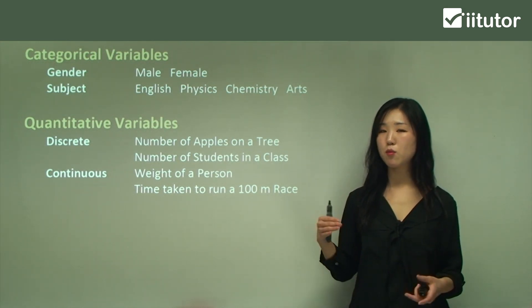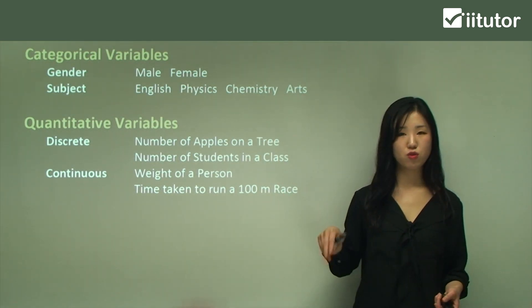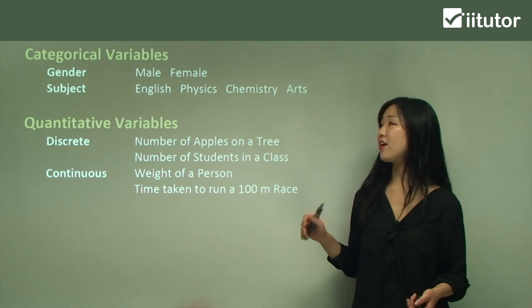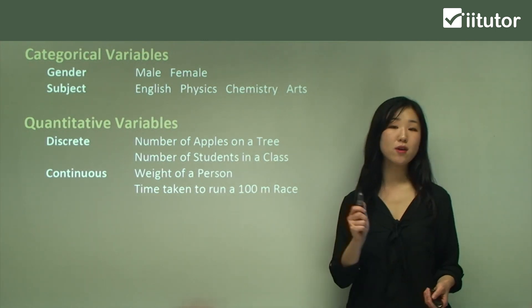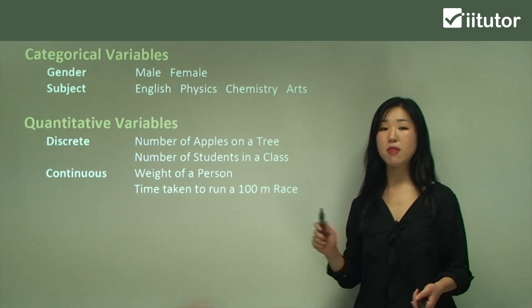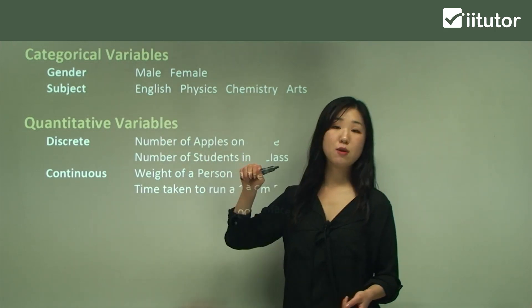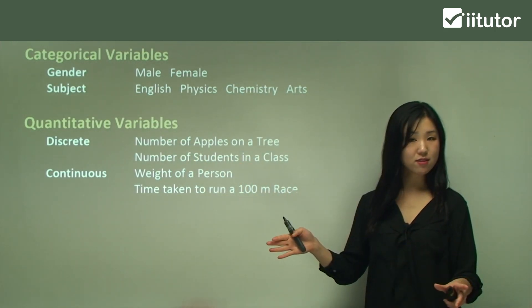So discrete and continuous are two subcategories within quantitative variables. Quantitative is a little more extensive because it branches into two. Remember: the two main types are categorical and quantitative, and quantitative has two separate branches we can classify it into.